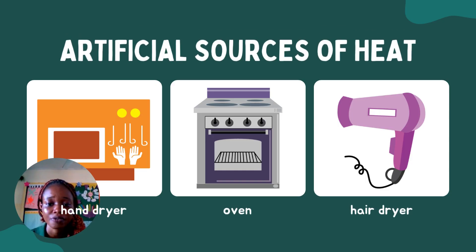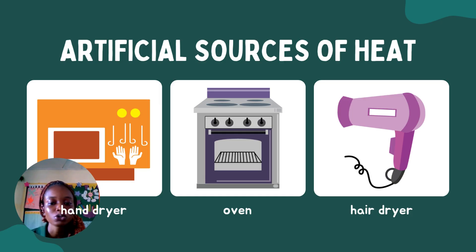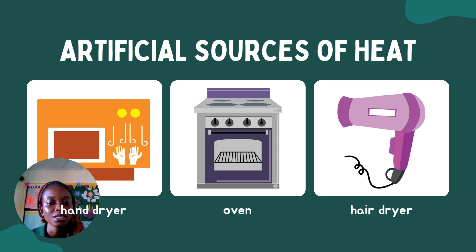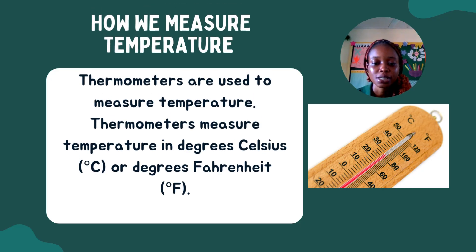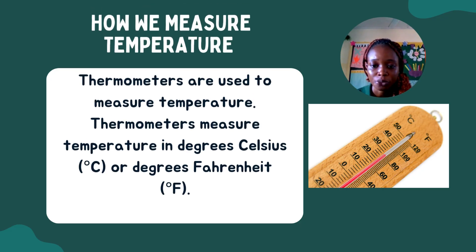We also have artificial sources of heat. This is a hair dryer, which we use most times to dry our hair. Ovens, which we use for cooking, generate heat. We also have hand dryers which we use to dry our hands. All of these are artificial sources of heat.